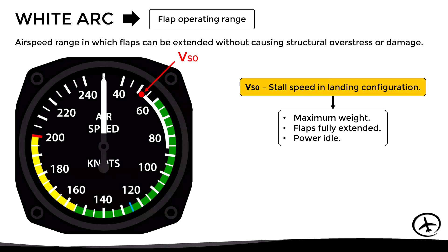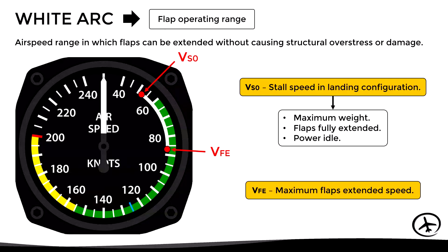The speed at which the white arc ends is the VFE — the maximum speed with flaps extended. If the aircraft exceeds this speed with flaps extended, it can cause structural overstress or damage. The pilot must always keep the airspeed within this arc when operating with flaps extended. However, many aircraft have different VFE speeds depending on the flap setting; if so, the white arc ends at the most restrictive VFE, and some flap settings may still be used above this arc.